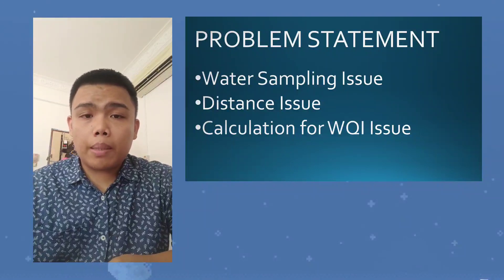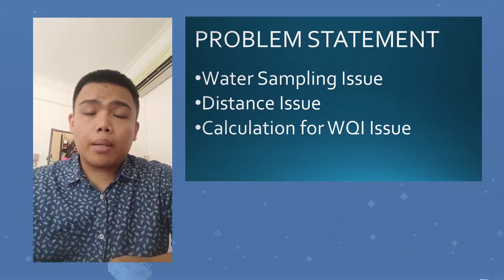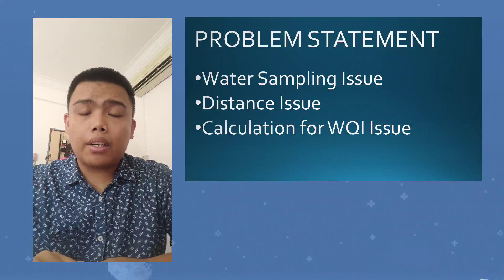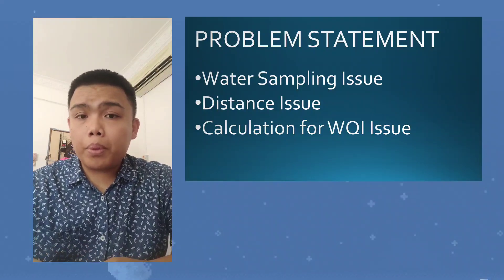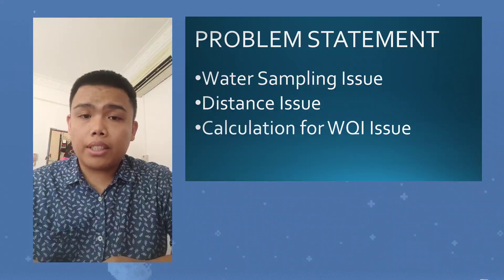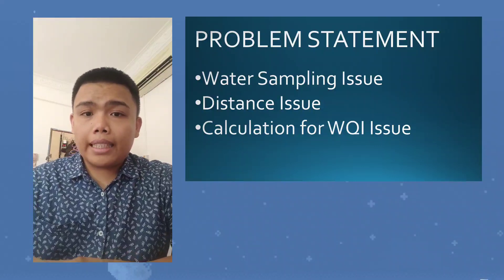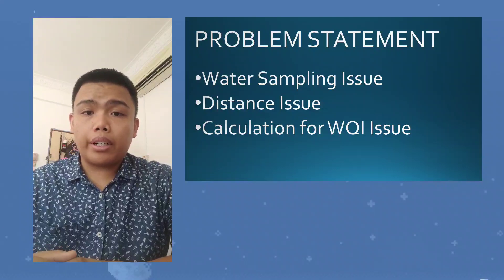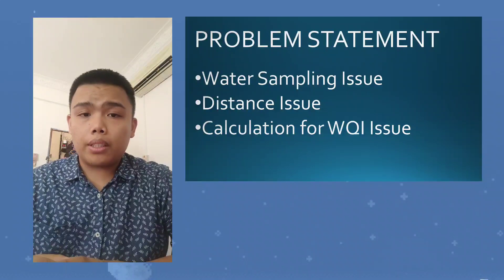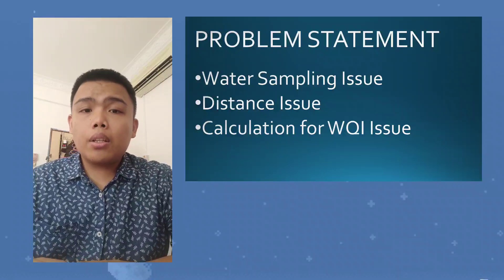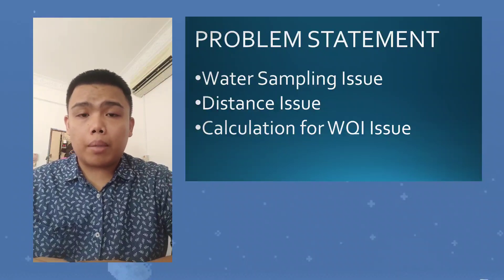The problem that arises for water sampling issues is that when samples are improperly taken or the amount of water samples taken is not enough. The problem with distance issues is the distance between the field research area and the laboratory. The ideal time for samples to get from the field to the lab is around 4 to 24 hours after being taken. The longer the sample is exposed to different temperatures and surroundings, the more incorrect the results will be.